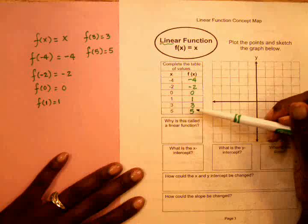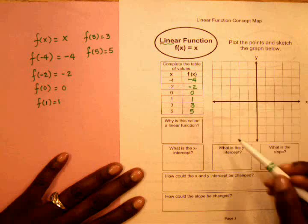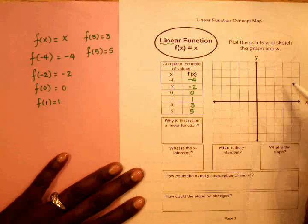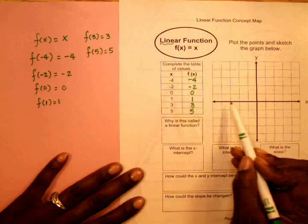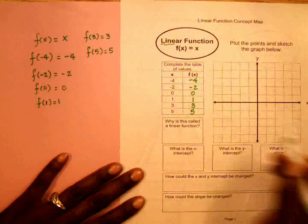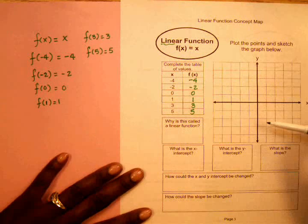Now, I'm going to use the coordinates from my table to plot on the graph. The x value tells me how far left or right, and the f(x) value tells me how far up or down to go on the y-axis.